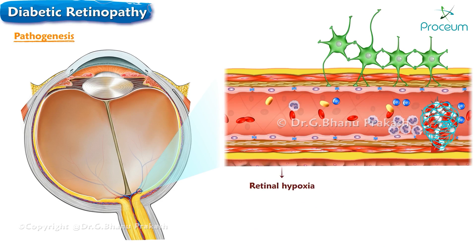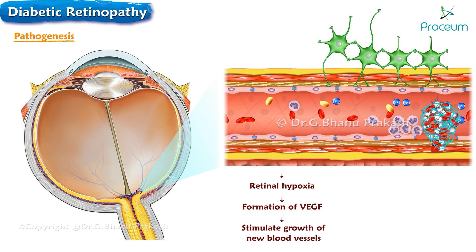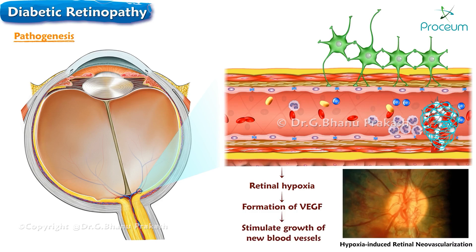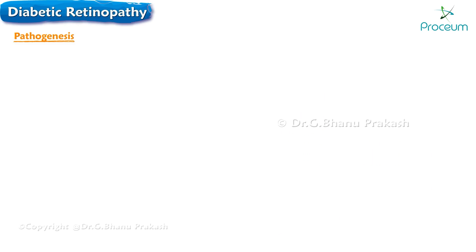In response to this hypoxia, the body produces a substance called vascular endothelial growth factor, which stimulates the growth of new blood vessels, a process called neovascularization.